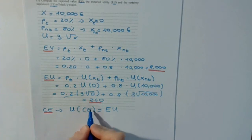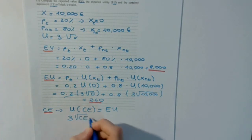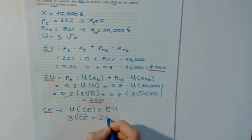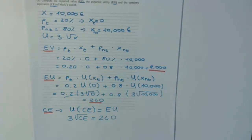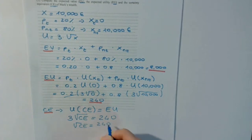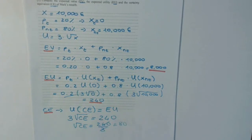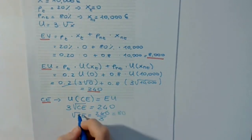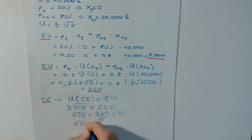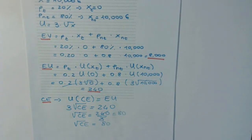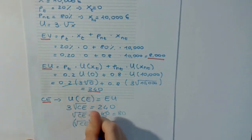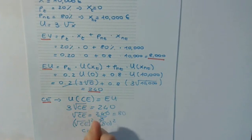We substitute the certainty equivalent into the utility function: 3 times the square root of CE equals 240. Solving: square root of CE equals 240 divided by 3, which is 80. Squaring both sides, CE equals 6,400. The certainty equivalent is 6,400 euros.